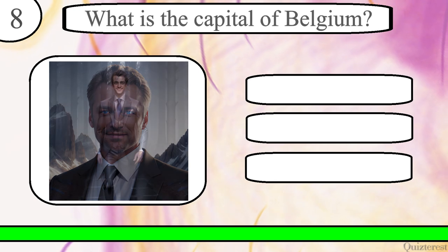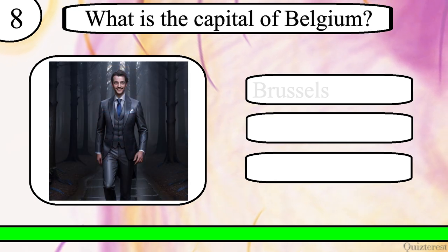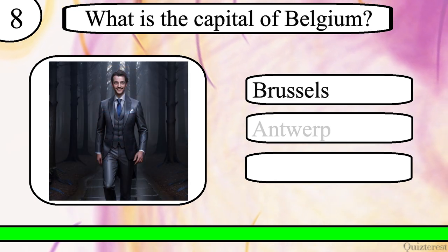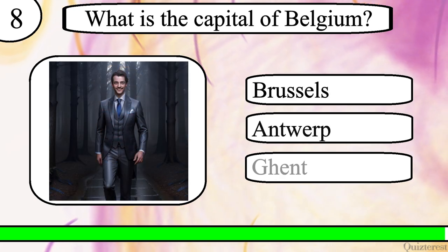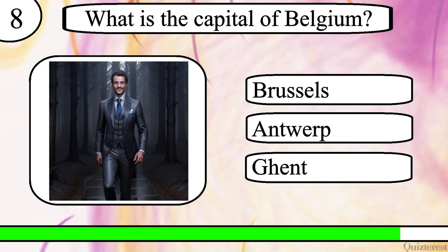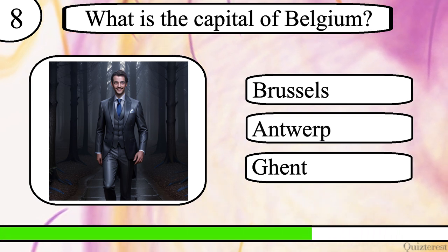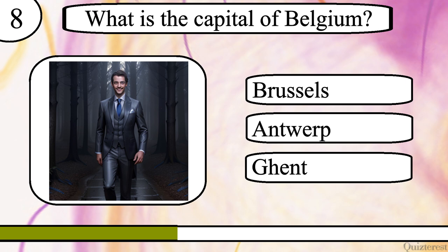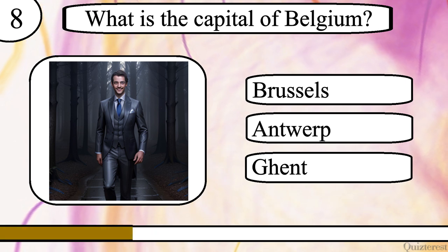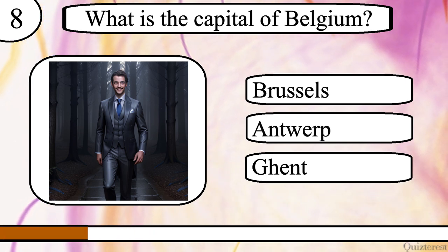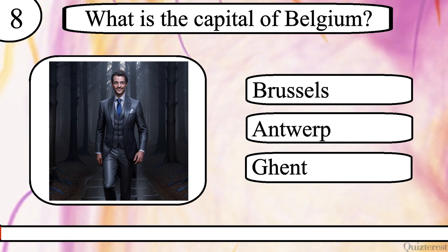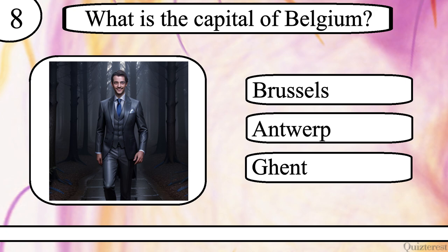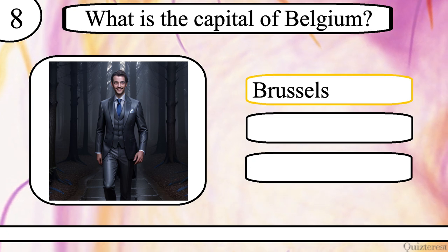Question 8. What is the capital of Belgium? Brussels, Antwerp, or Ghent? The correct answer is Brussels.